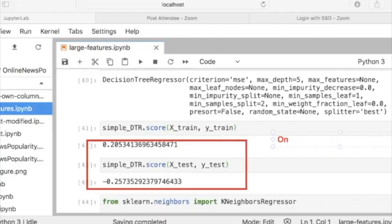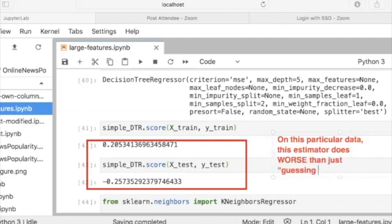What this means, if you see this on your score for your sklearn estimator, is that on this particular data, this estimator does worse than just guessing the average value. Don't panic, try a different model.